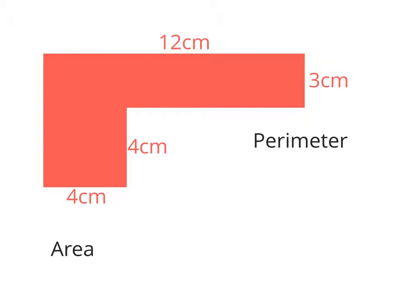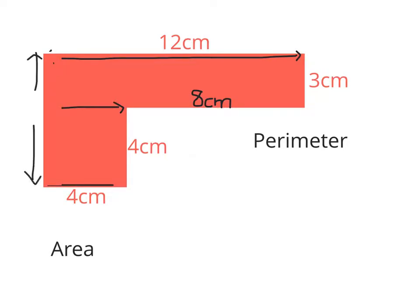In this example we have an irregular shape, but we can still calculate the perimeter and the area because we have all the required measurements. Let's begin by working out the missing measurements. If the bottom side is 4 and the whole thing is 12, then 12 minus 4 means that side is 8 centimeters. The other side not given to us is simply 4 plus 3, giving 7 centimeters.